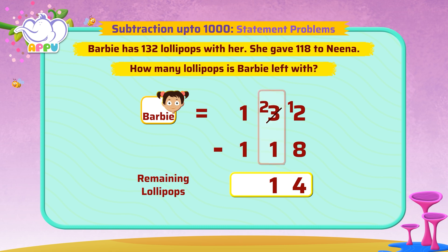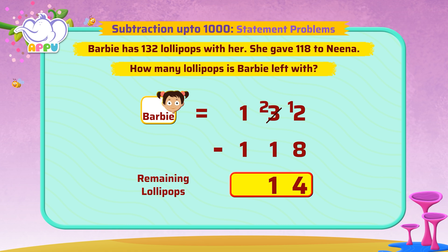Finally, in the hundreds place, we have 1 minus 1, which is equal to 0. So 132 minus 118 is equal to 14. Barbie has 14 lollipops left with her.